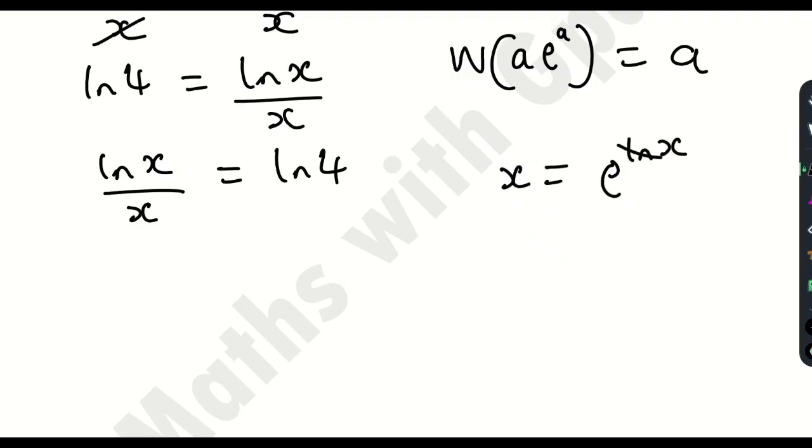Yes, because ln and e, they are inverse functions. So they can cancel out and if they do so, you have x, which is the same as what we have here.